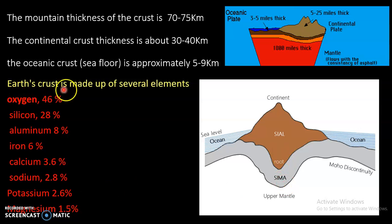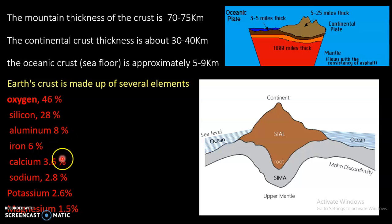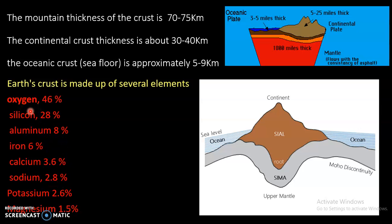The Earth's crust is made up of several elements, in which oxygen is 46%, silicon is 28%, aluminium is 8%, iron is 6%, calcium is 3.6%, sodium is 2.8%, potassium is 2.6%, and magnesium is 1.5%. Out of these, only oxygen and silicon have dominance in the crust, containing 46% and 28% respectively.